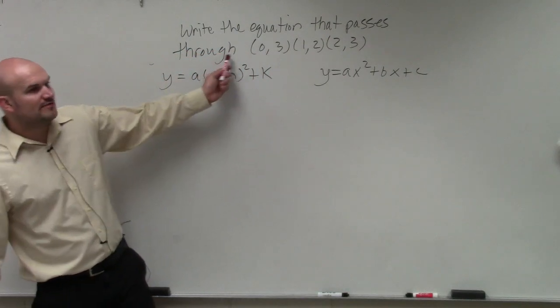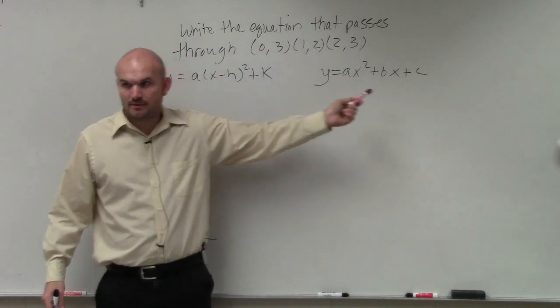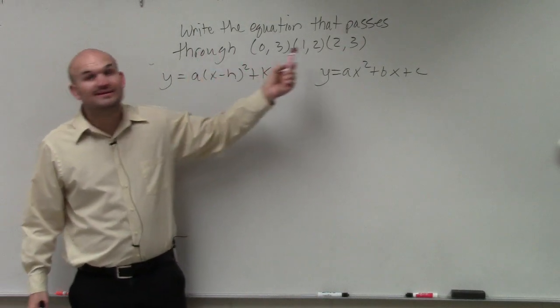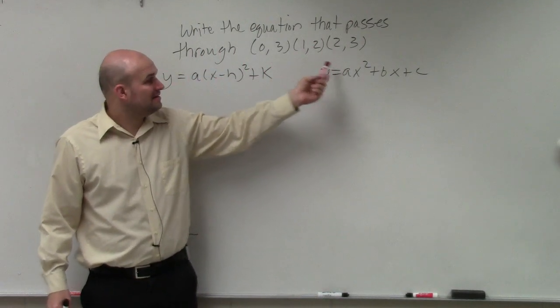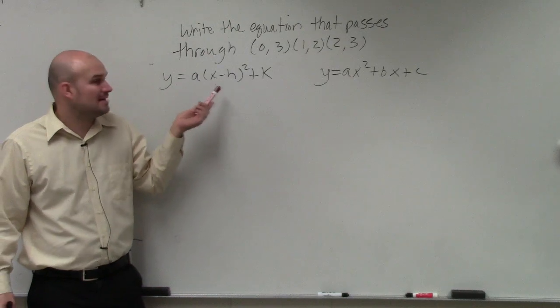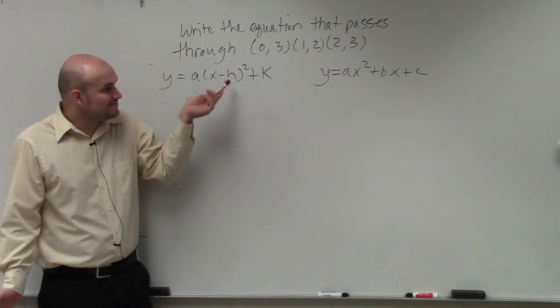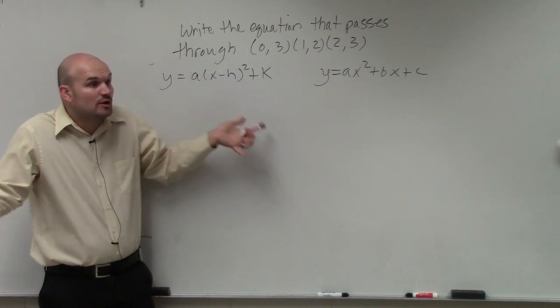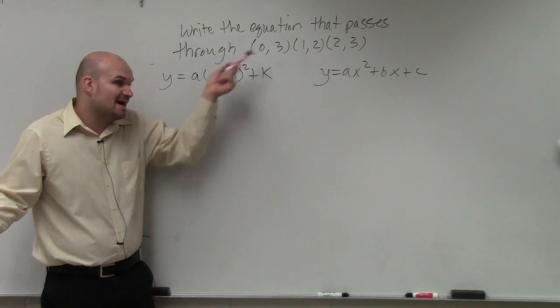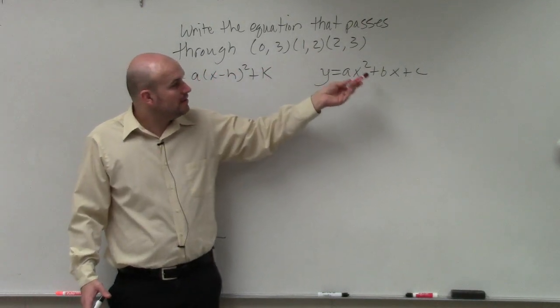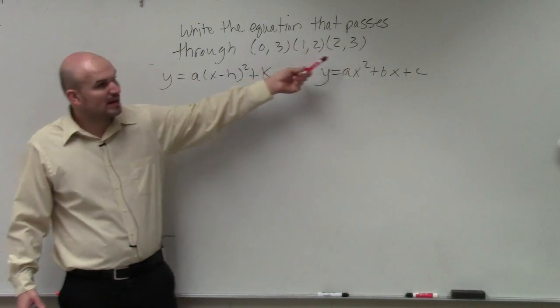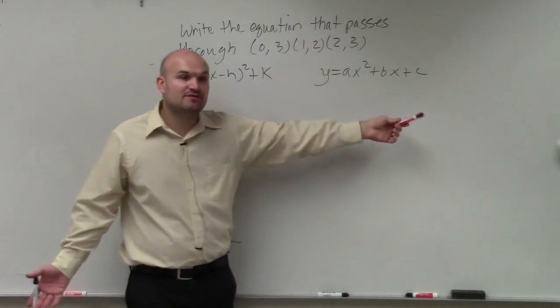Now, do we know if any of these are the vertex? No. So guess what? This really isn't going to help us that much. Because what's nice about this one, we like to use it when we know what the vertex is, when we can apply our h and our k. In this case, though, we have three points, none of which we know is the vertex.